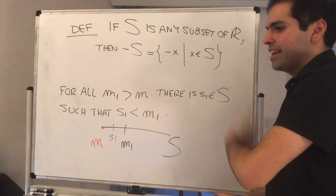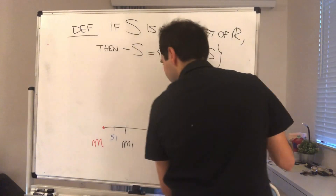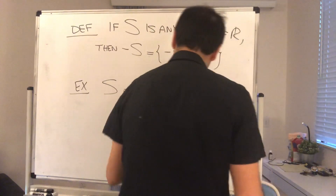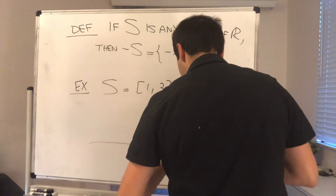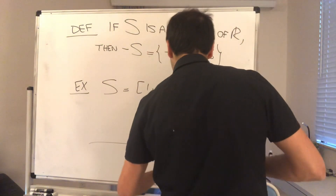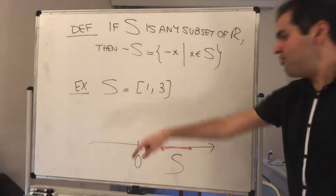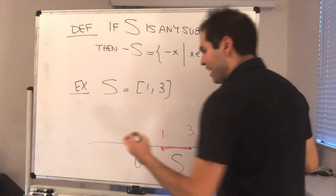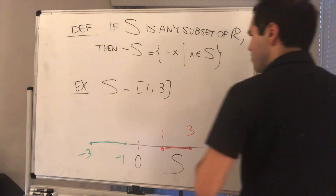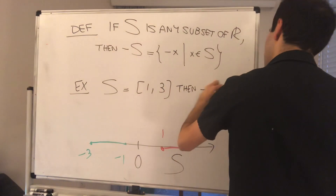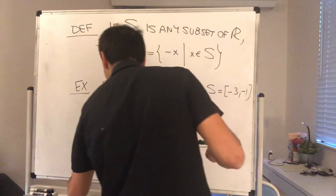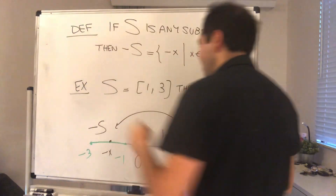All that this means is: you take S and reflect it across the origin. For instance, let's take the set [1, 3]. If S is [1, 3], then minus S is [-3, -1], because for every x in S, you just take minus x. Minus x in that set ultimately gives you minus S.